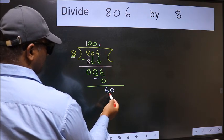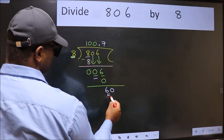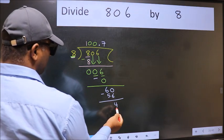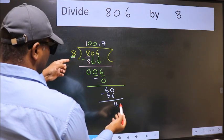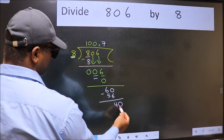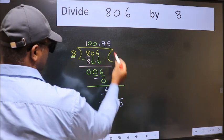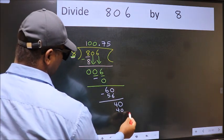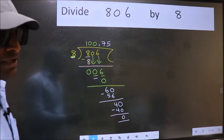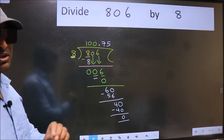So now we can put dot and take 0. So 60. A number close to 60 in the 8 table is 8 × 7 = 56. Now we subtract. We get 4. 4 is smaller than 8, and we already have the decimal, so take 0. 40. When do we get 40 in the 8 table? 8 × 5 is 40. Now we subtract. We get 0. Did you understand where the mistake happens? You should not do that mistake.